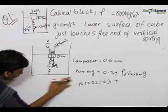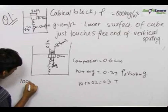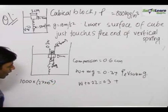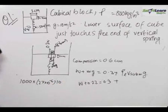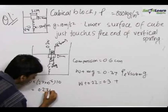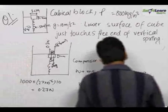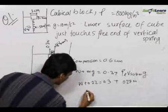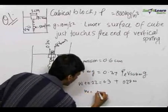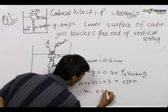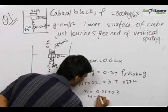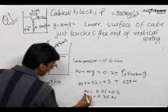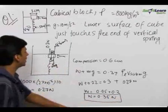Let us calculate this quantity now. Rho liquid is equal to 1000, V submerged is 27 into 10 raised to minus 6 meters cube and g is 10. So this gives us the value to be 0.27 newtons. So we substitute 0.27 newtons over here.